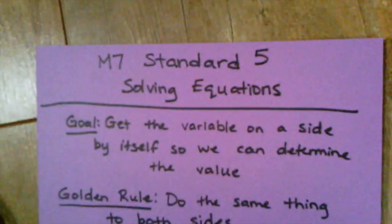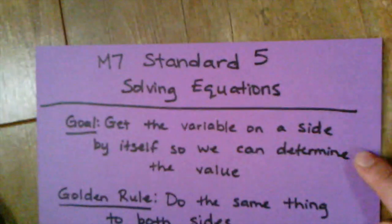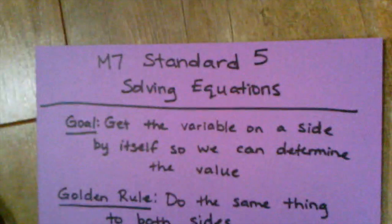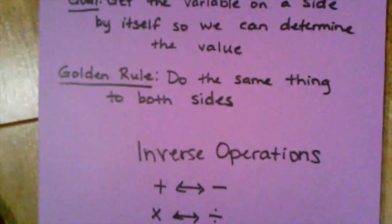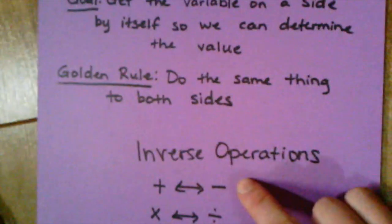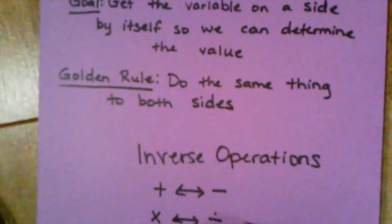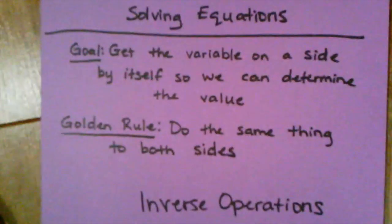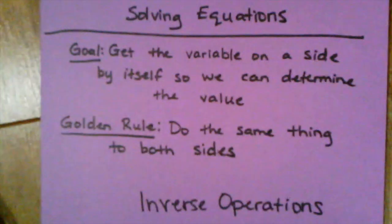In review, here are just a couple of reminders for you. For the standard, our goal is always to get the variable on a side by itself so that we can determine the value. Today we did that by using inverse operations, meaning that we were using the operations opposite of what we saw to help us solve for that unknown variable. For example, if we saw addition, we would use subtraction. Or if we saw division, we might use multiplication to help us figure out what the value is. Most important thing to keep in mind is that we need to follow this golden rule here. Whatever we do to one side of the equation, we must do to the other side. That way our equation will stay balanced.